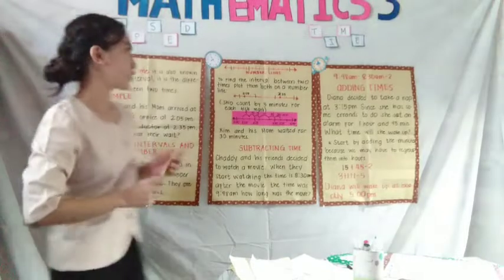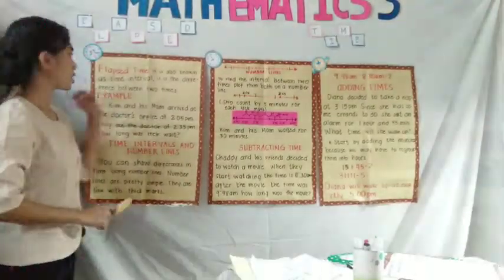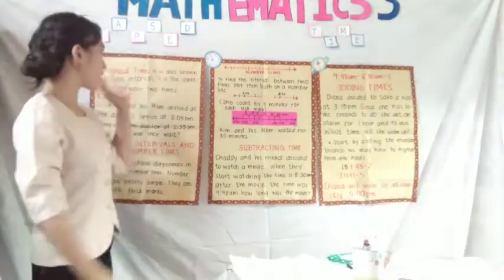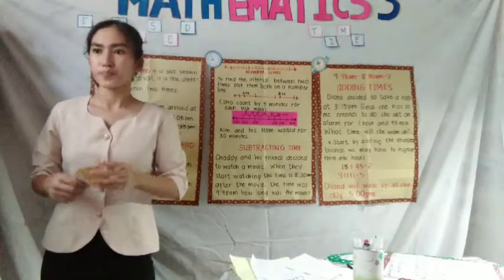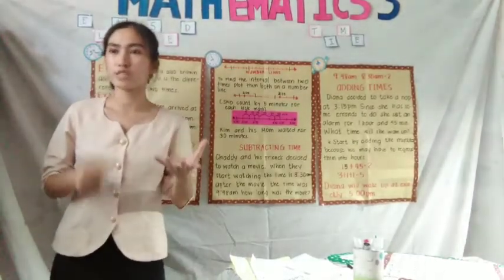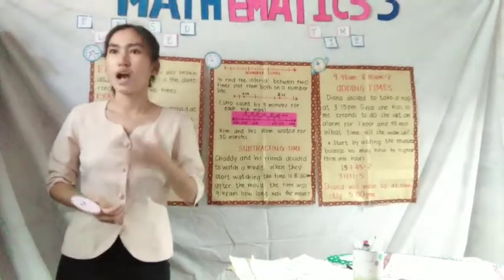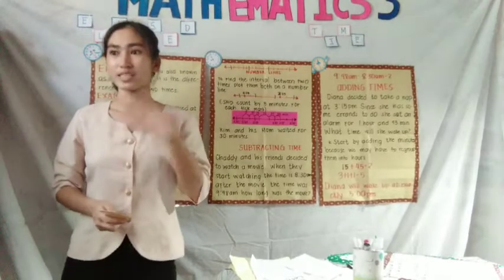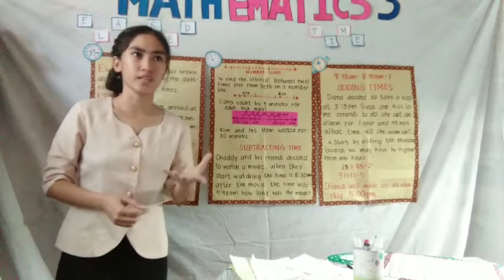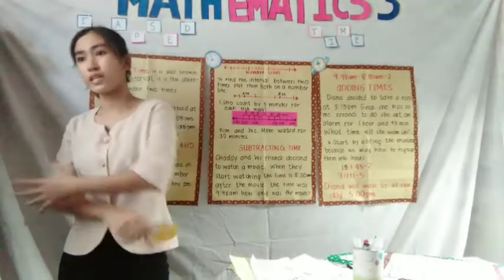But so, our topic today is elapsed time. So what is elapsed time? It is also known as time interval. It is the difference between two times. So in knowing elapsed time, it is determining the difference between two different times. It answers how long something takes. For example, your homework. What time have you started doing your homework and what time have you finished it? And the interval between those two times is what you call elapsed time.